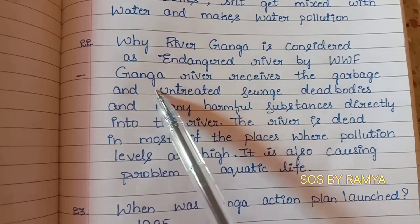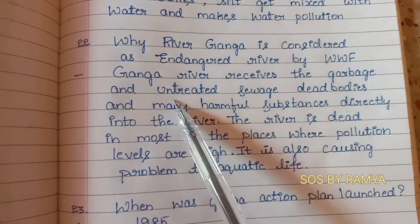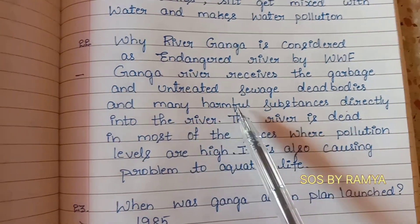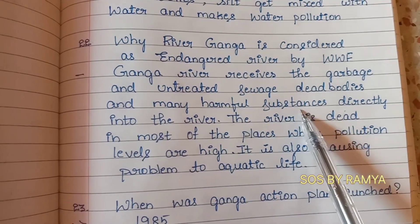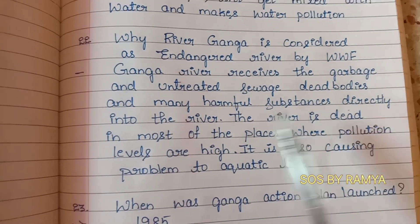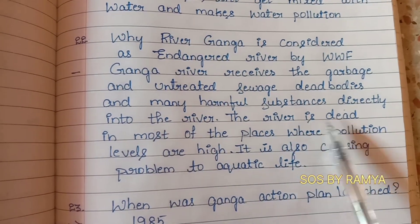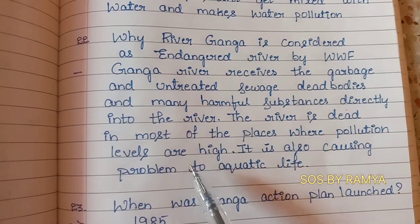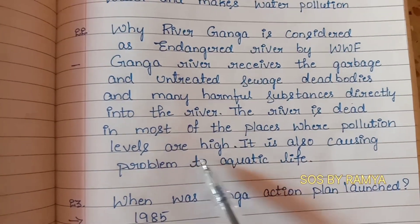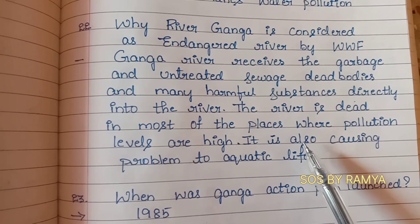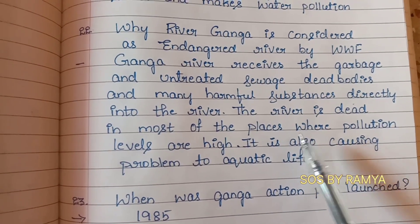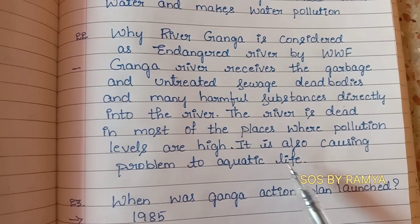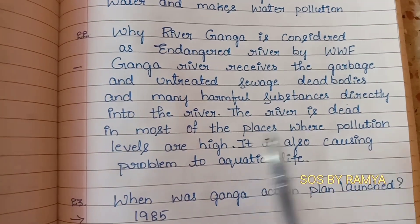To repeat: the Ganga river receives garbage, untreated sewage, dead bodies, and many harmful substances directly. The river is dead in most places where pollution levels are high. Hence, we call this river an endangered river, and it is also causing problems to aquatic life.